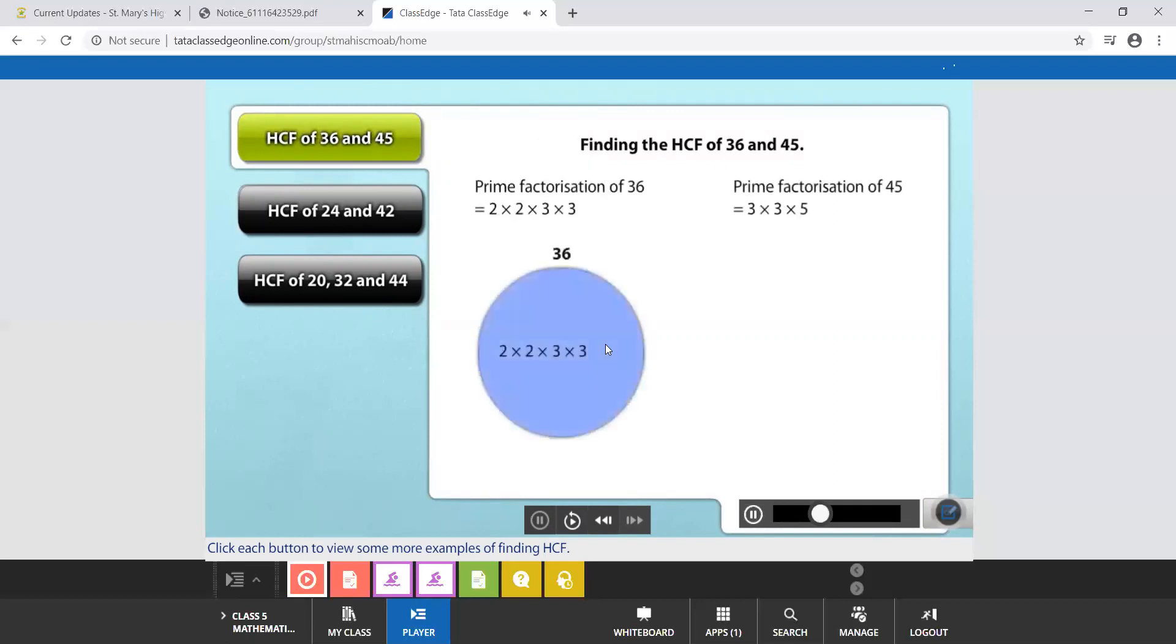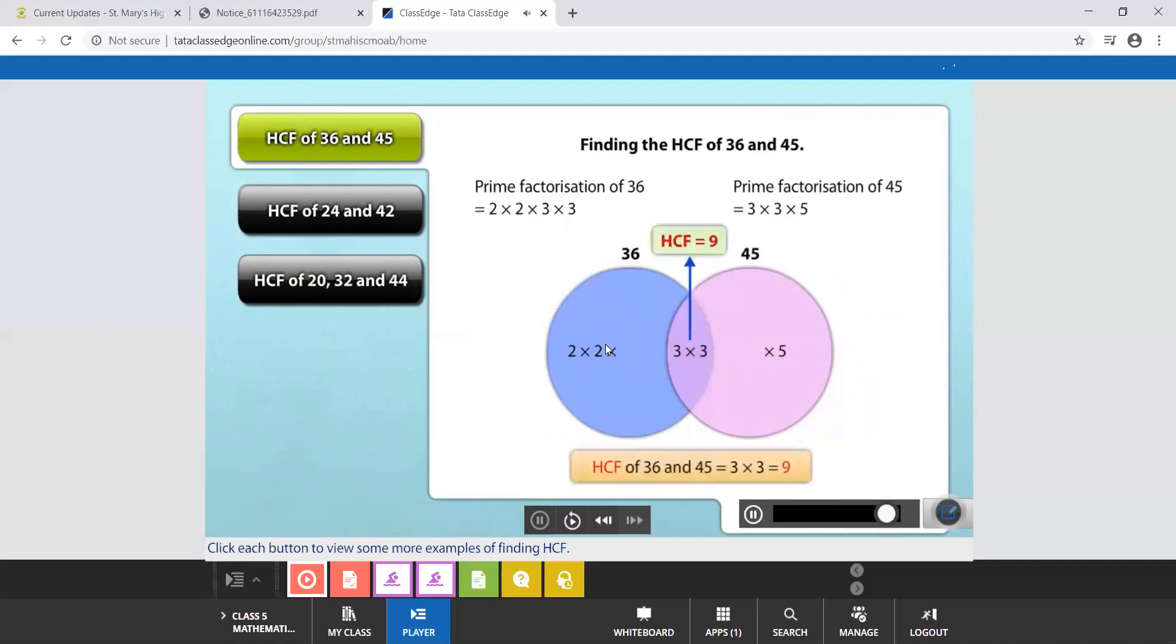36 equals 2 into 2 into 3 into 3. 45 equals 3 into 3 into 5. Let us see what the common factors for both numbers are. You will notice that 3 into 3 is common in both numbers. Therefore, the HCF of 36 and 45 equals 3 into 3, that is 9.